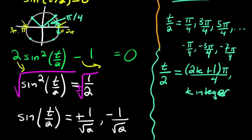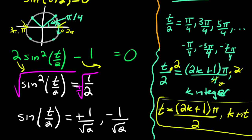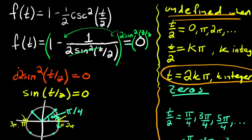You can verify by plugging in k = 0, 1, 2, 3, −1, −2 and you'll get exactly those values. The last step is to multiply both sides by 2 to get t, and you get t equals (2k+1) times pi over 2, where k is an integer. So that's it — we've found where the zeros are and where this function is undefined.